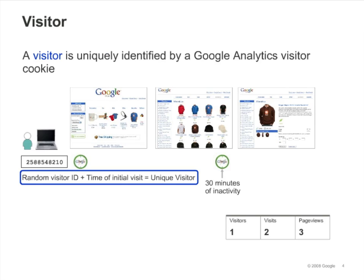A visitor is uniquely identified by a Google Analytics visitor cookie, which assigns a random visitor ID to the user, and combines it with the timestamp of the visitor's first visit. The combination of the random visitor ID and the timestamp establish a unique ID for that visitor. You'll learn more about the visitor cookie in a subsequent module.